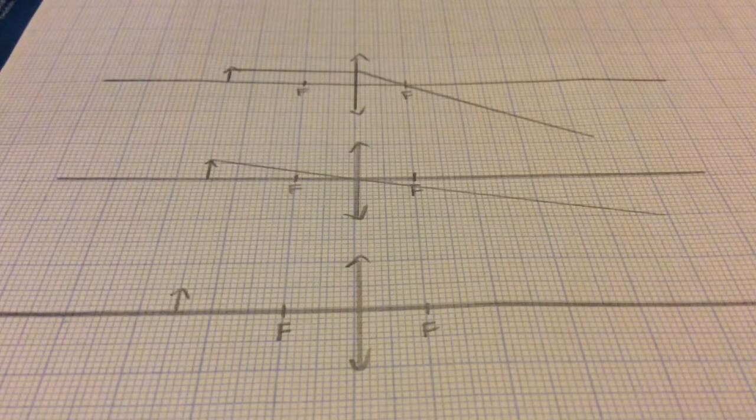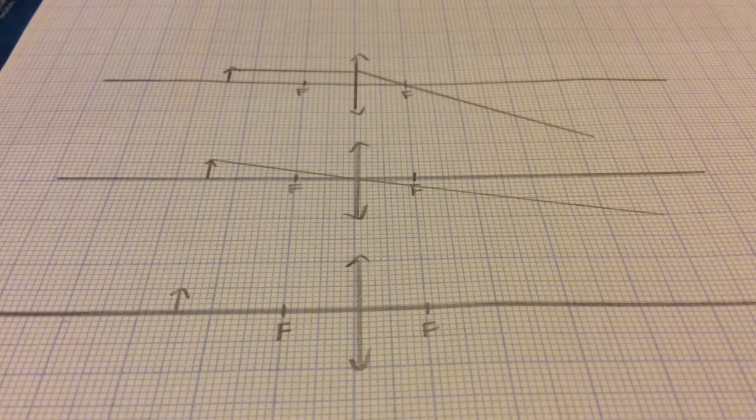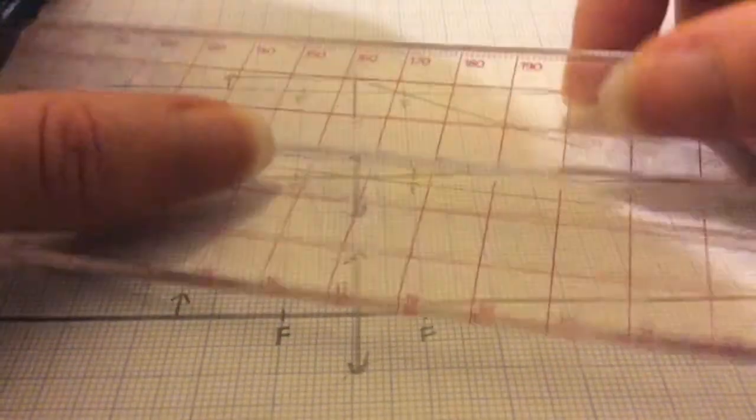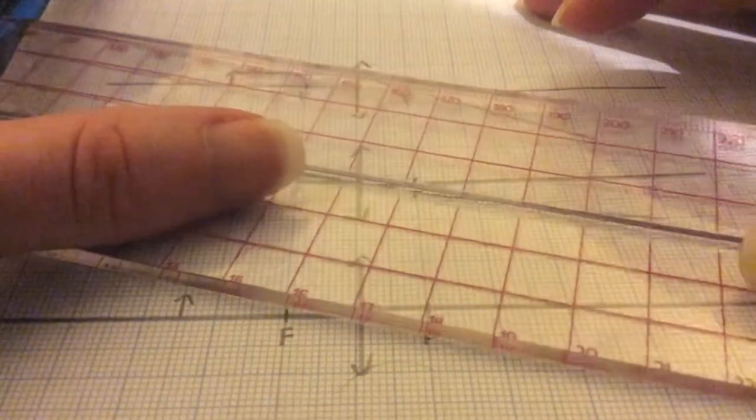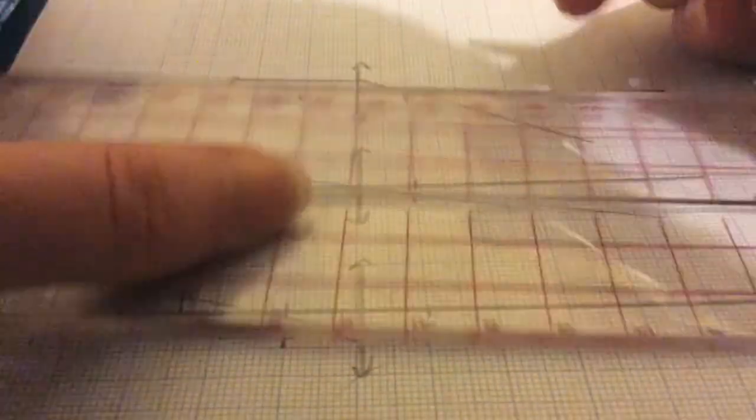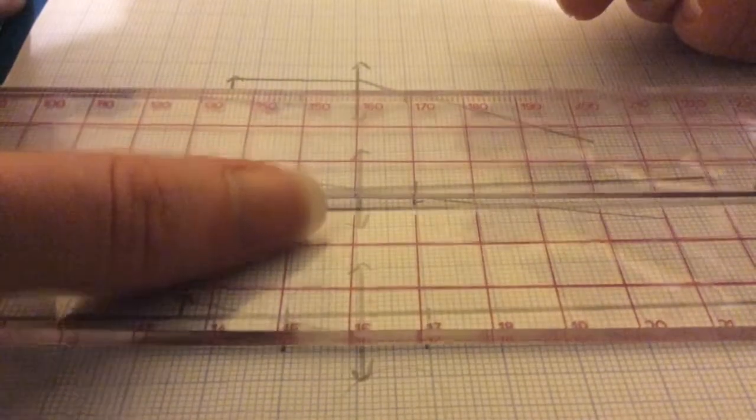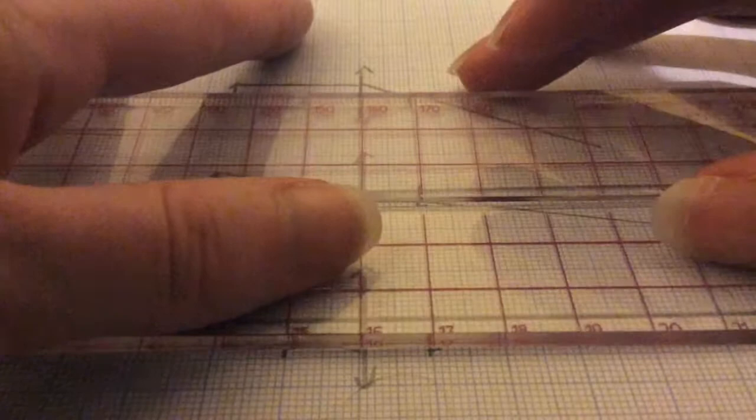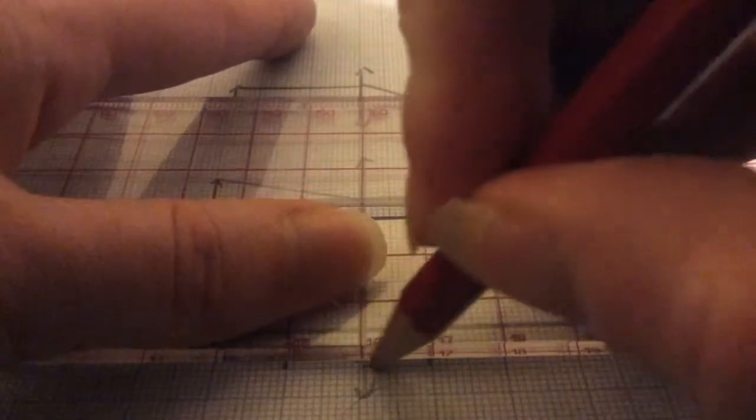The final guide ray is the opposite to the top one. Draw the line from the object through the focal point hitting the lens. A ray that passes through the focal point on its way to the lens will be refracted so that it travels parallel to the principal axis when it emerges.